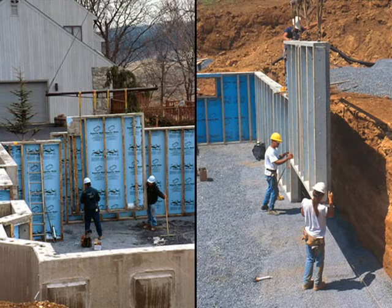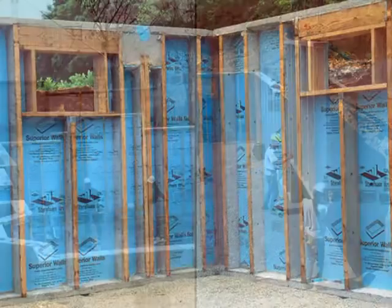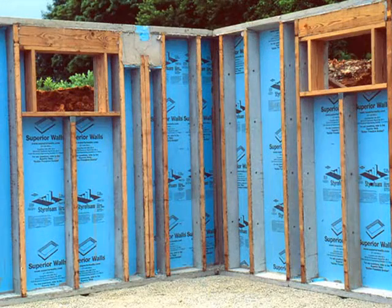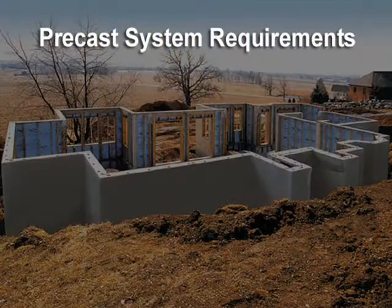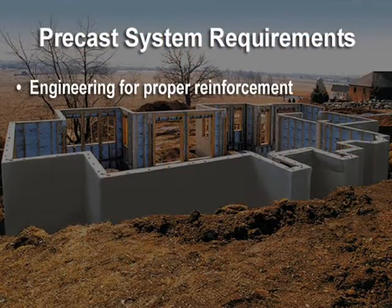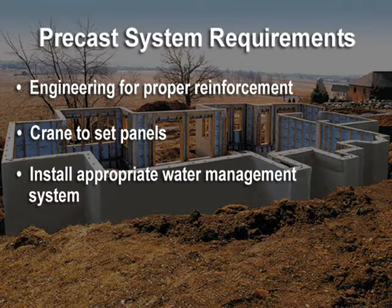The second precast system combines high-strength concrete with rigid insulation in single panels. This system includes a cavity on the interior for wiring, plumbing, and additional insulation if needed. They may also come with metal or wood framing to attach drywall. Each of these precast systems requires engineering for proper reinforcing, the need for a crane to set the panels, and the installation of an appropriate water management system.